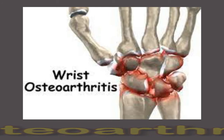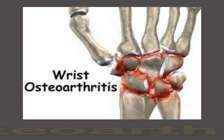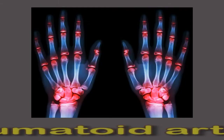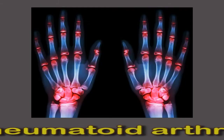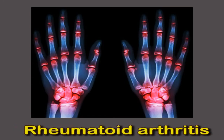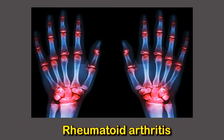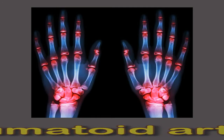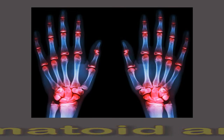Rheumatoid arthritis is an autoimmune disease where healthy tissues are broken down by the body's immune system. This can cause wrist pain if the joints in the area are affected.